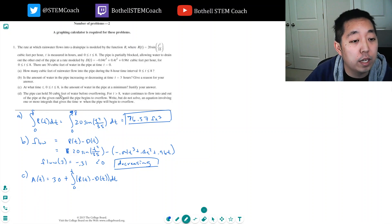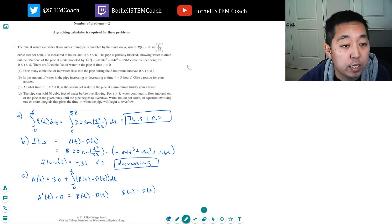So in order to find a minimum, I've got to know the critical points. The critical points are when this is 0. And when I take the derivative of this, it's simply, derivative of 30 is 0, plus the derivative of this, by fundamental theorem of calculus, this is R of T minus D of T. So I want to know when this is equal, or in other words, when R of T is equal to D of T, right? And so then I'm going to take these two functions and I'm going to set them equal to each other, and I'm going to find what T is equal to.